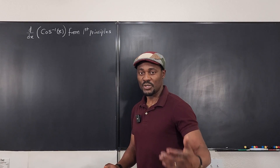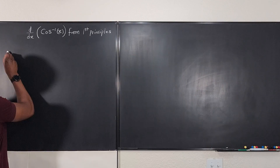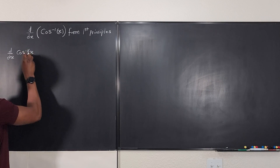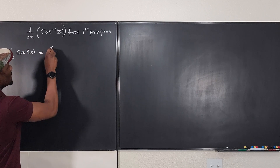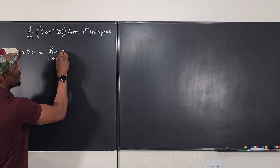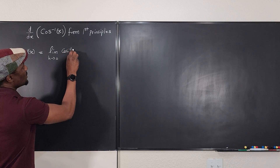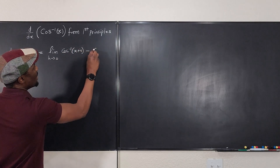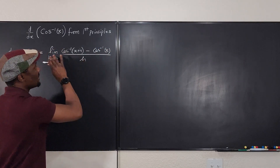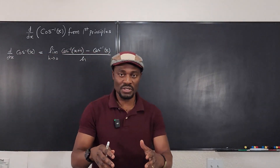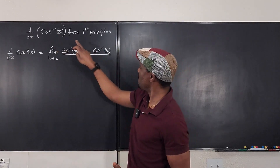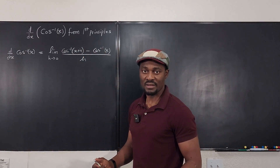So the first thing we're going to do is write the definition of the derivative. We're going to say d/dx of inverse cosine of x is equal to the limit — this is usually the definition — as h goes to 0 of inverse cosine of (x + h) minus inverse cosine of x, divided by h. This is the definition. Whatever the function is, you just change the argument into x + h on the first part, and you repeat the function on the other side.